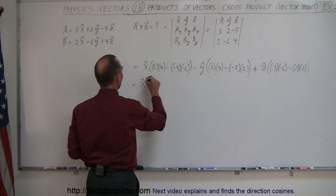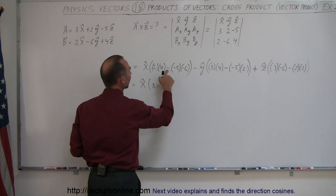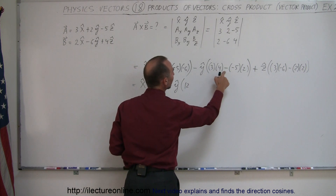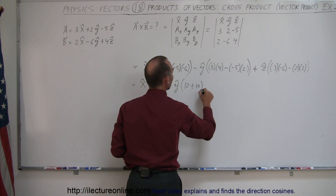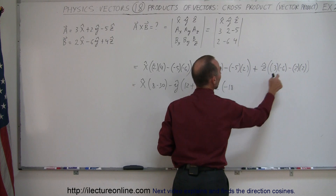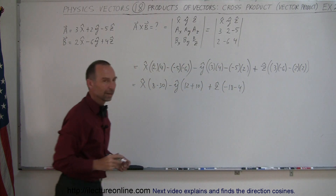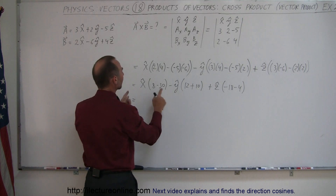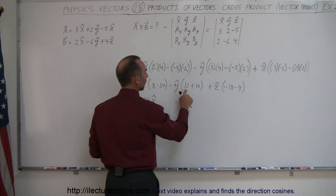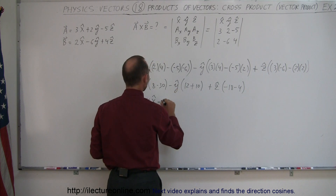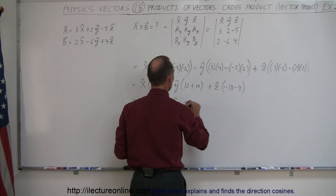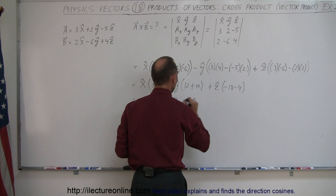So this simplifies to: X times eight minus thirty, minus the Y unit vector times twelve minus negative ten — that becomes plus ten — plus the Z unit vector times negative eighteen minus four. Combining further: eight minus thirty is minus twenty-two in the X direction; twelve plus ten is twenty-two, but with the minus sign that's minus twenty-two in the Y direction; and negative eighteen minus four is minus twenty-two in the Z direction.